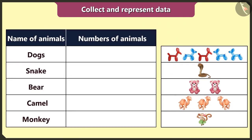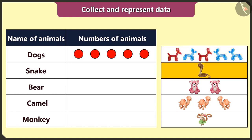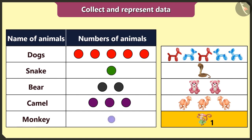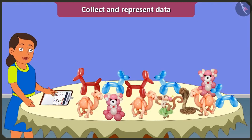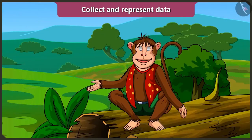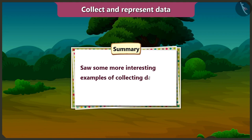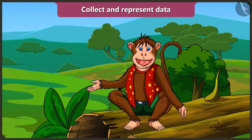Now I will count: five dog-shaped balloons in the first group, one snake-shaped balloon in the second, two bear-shaped balloons in the third, three camel-shaped balloons in the fourth, and one monkey-shaped balloon in the fifth. I will make a table and represent all the data using circles — five circles for dogs, one for snake, two for bears, three for camels, and one for monkey. By representing data like this, I can easily remember so much information. Children, in this video we saw some more interesting examples of collecting data and representing it in a table.